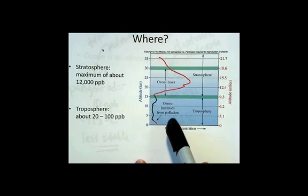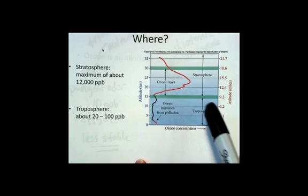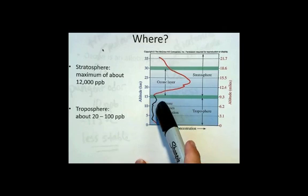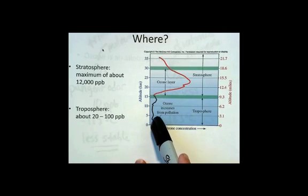And you see that in the troposphere, by and large, up to about nine miles, the ozone concentration is pretty low. We have this little red region right down here where it's a little higher.